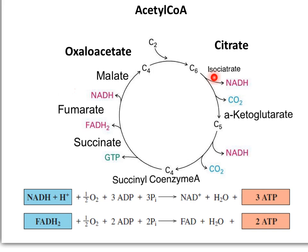On the third step, oxidative decarboxylation of isocitrate by isocitrate dehydrogenase releases carbon dioxide, electrons, and protons. The five-carbon molecule alpha-ketoglutarate combines with coenzyme A and NAD+ to undergo a second oxidative decarboxylation, releasing electrons and carbon dioxide. The product, succinyl coenzyme A, has a high-energy thioester bond.